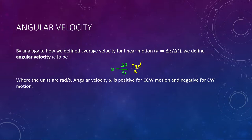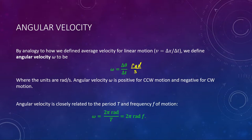There is another way to define angular velocity — in relation to period and frequency. Angular velocity can be given by the full 2π of a circular path: if you go all the way around once, you sweep out 2π radians, and the time it takes is the period T. Period is the time to complete one revolution, to sweep out 2π radians. So omega equals 2π radians over T, which is the same as 2π times f, the frequency.